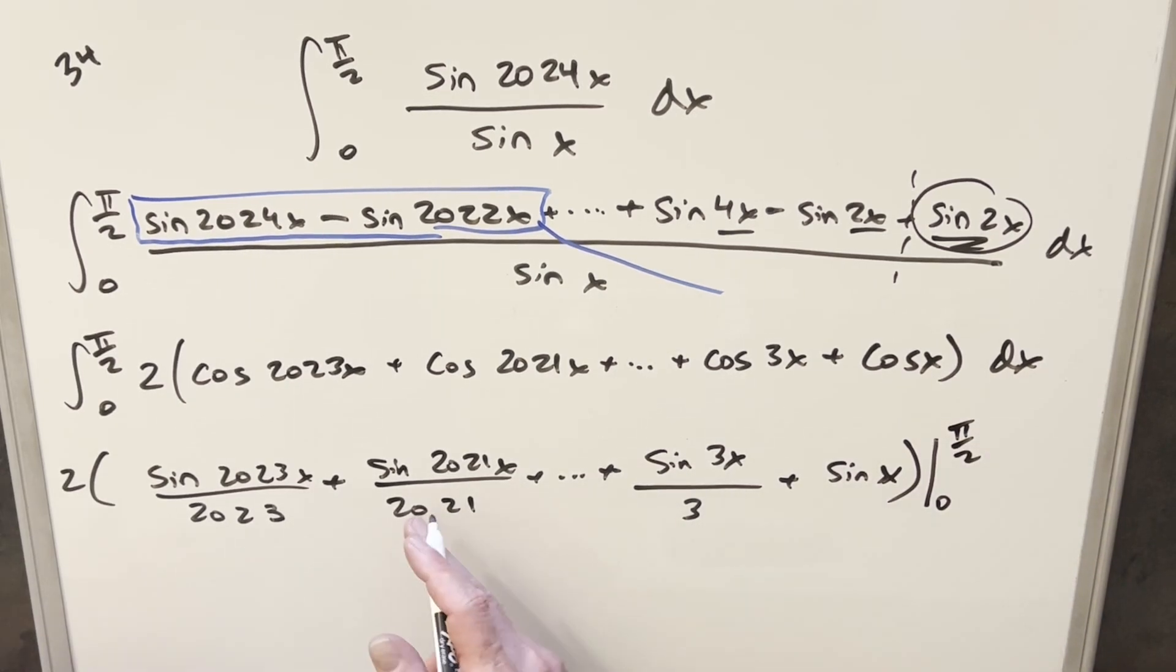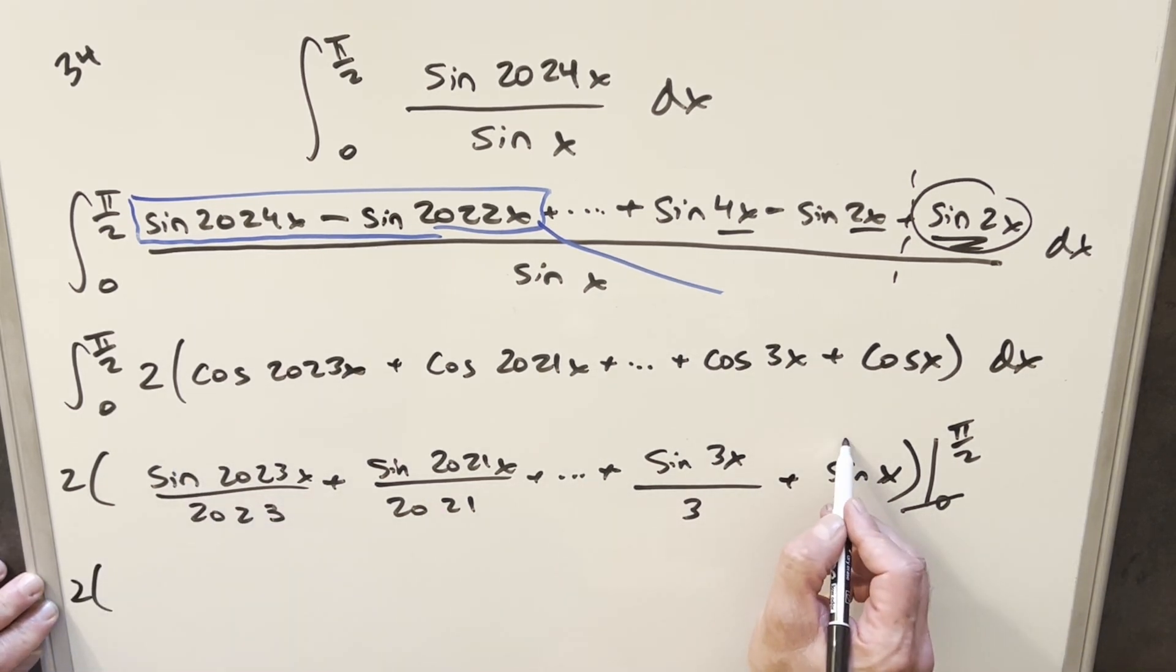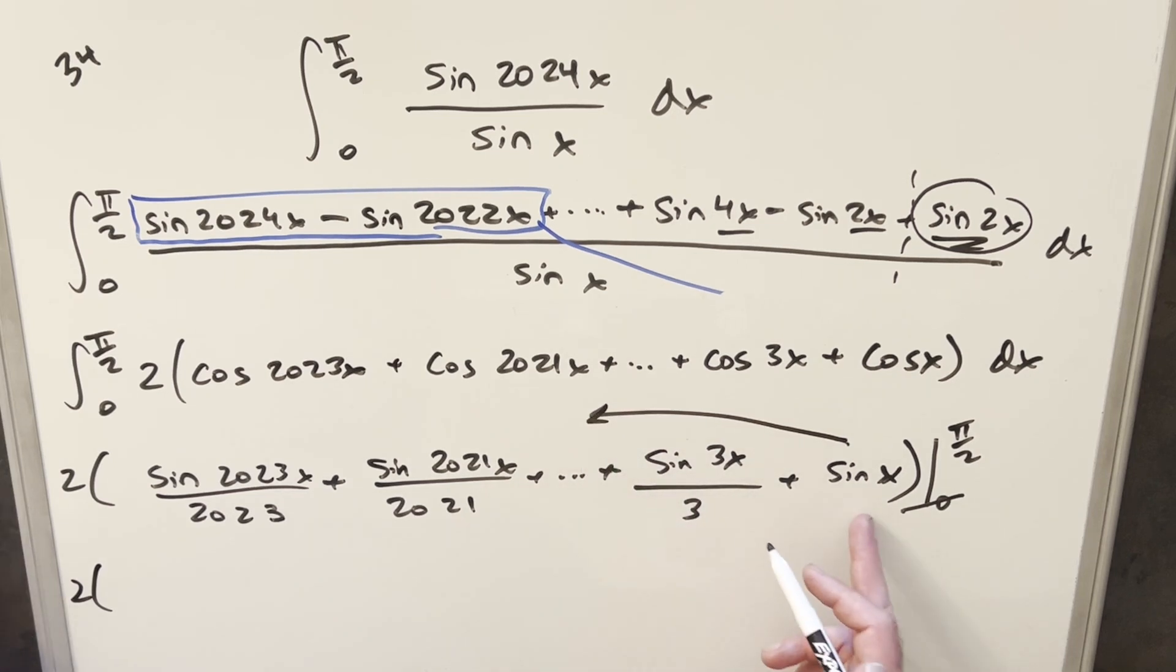But notice when you evaluate 0, sine of 0 is 0. So we don't have to worry about that. And so we just need to evaluate at π/2. But I'm actually going to reverse the order. So instead of starting here, I'm going to start to the right and go this way.